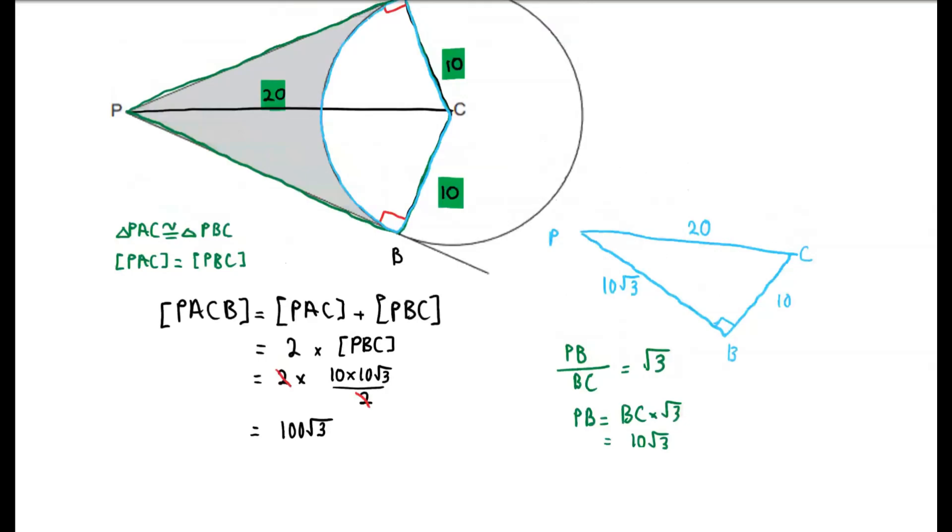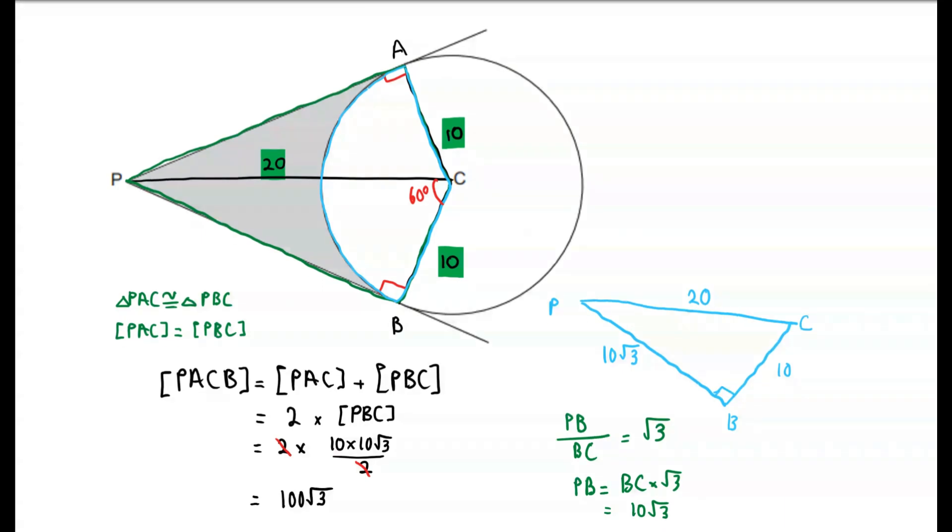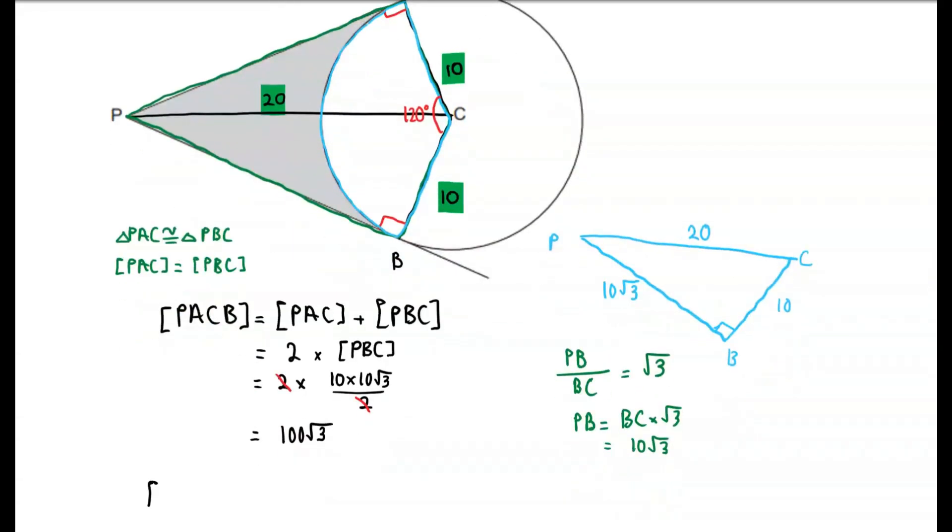So as we noticed, triangle PBC is a 30-60-90 triangle. So this means that angle PCB is 60 degrees. And also, since triangle PAC is congruent to triangle PBC, angle PCA is also 60 degrees. However, we could just replace this with angle BCA being 120 degrees.